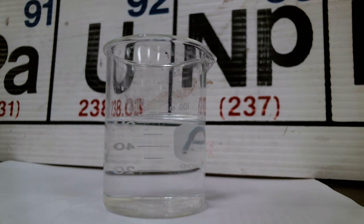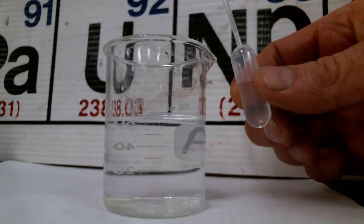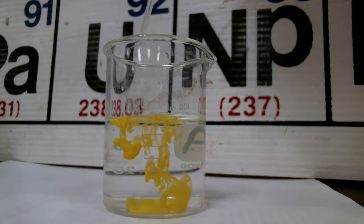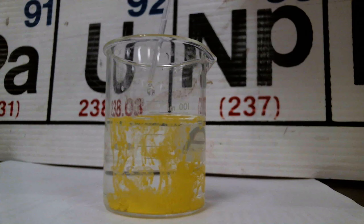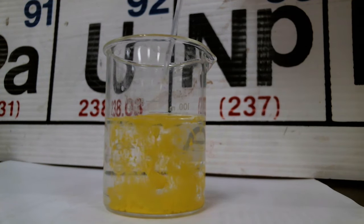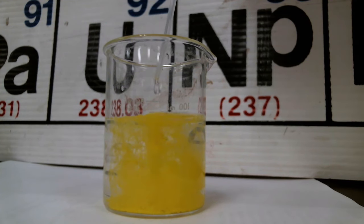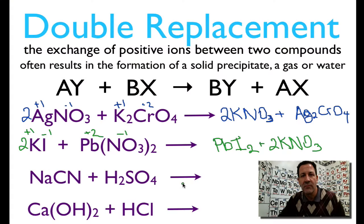Now we're going to do the double displacement reaction between lead nitrate and potassium iodide. In my beaker I have my solution of lead nitrate, and from my pipette I'm going to add some potassium iodide — just a few drops at a time. You can see we get that very beautiful canary yellow color. That's a solid, that's a precipitate. It might not look like a solid, but it's in solution, and if we wanted to we could pass it through a filter to collect the solid. That is the result of the reaction between potassium iodide and lead nitrate.